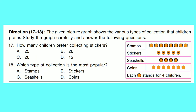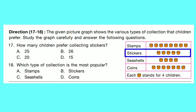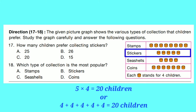Direction for questions 17 and 18: The given picture graph shows the various types of collections that children prefer. Study the graph carefully and answer the following questions. Question number 17: How many children prefer collecting stickers? Each picture stands for 4 children. For stickers there are 5 pictures. So total number of children: 5 into 4 equals 20. Option C is correct: 20.